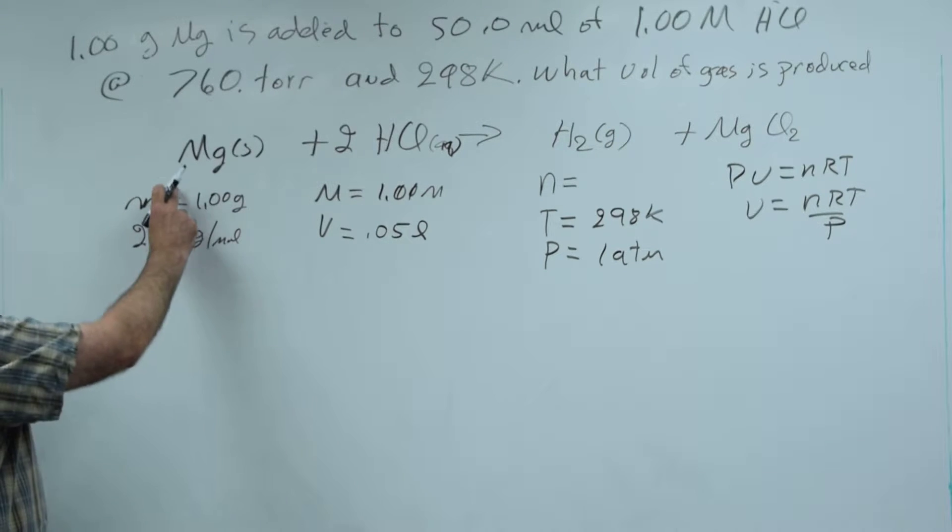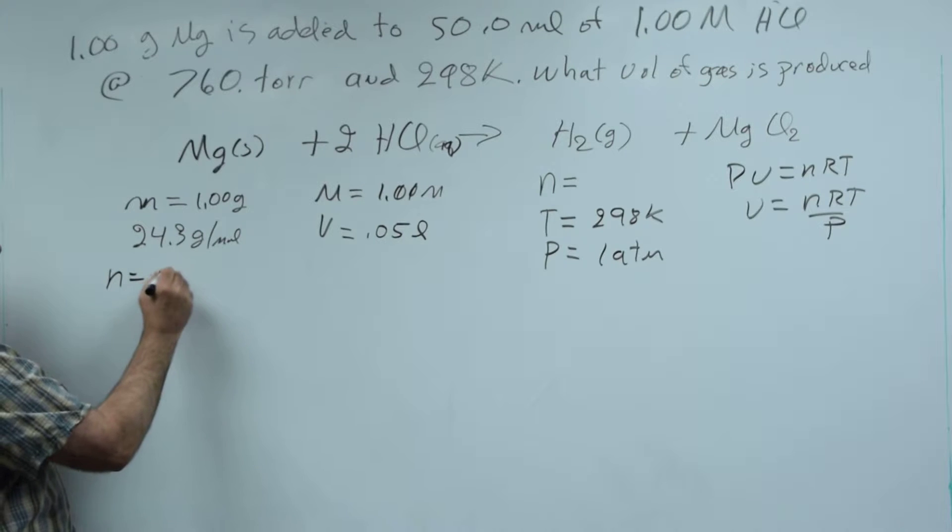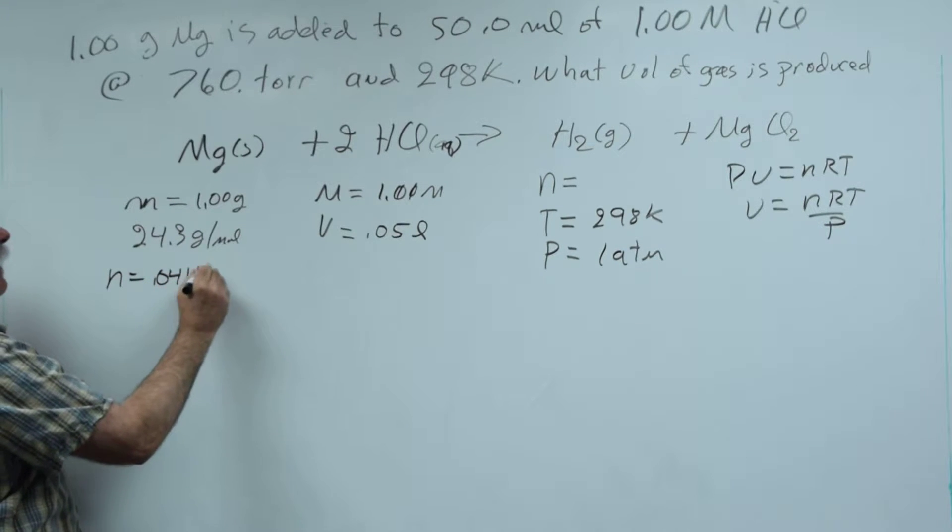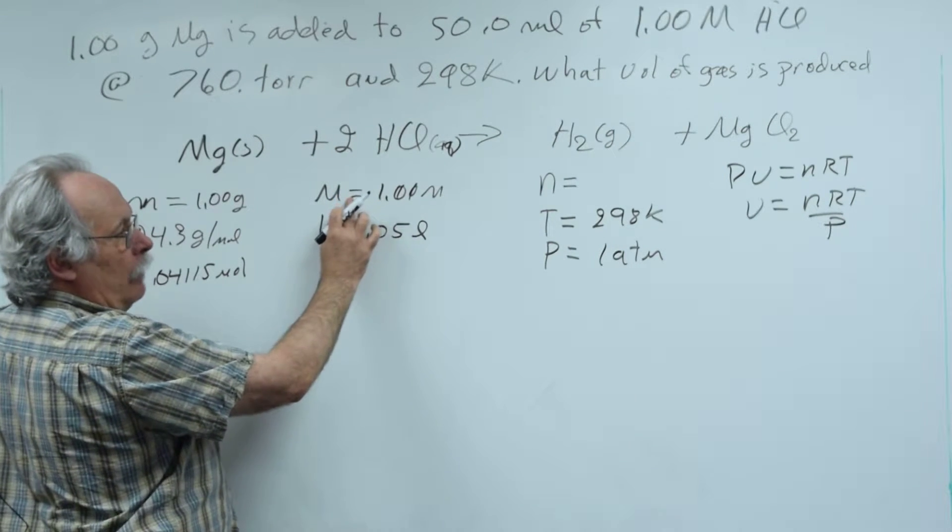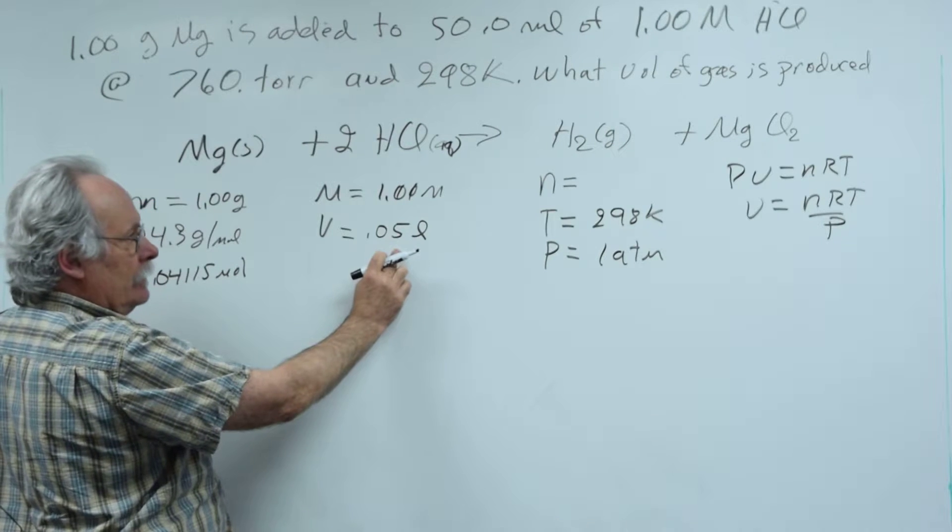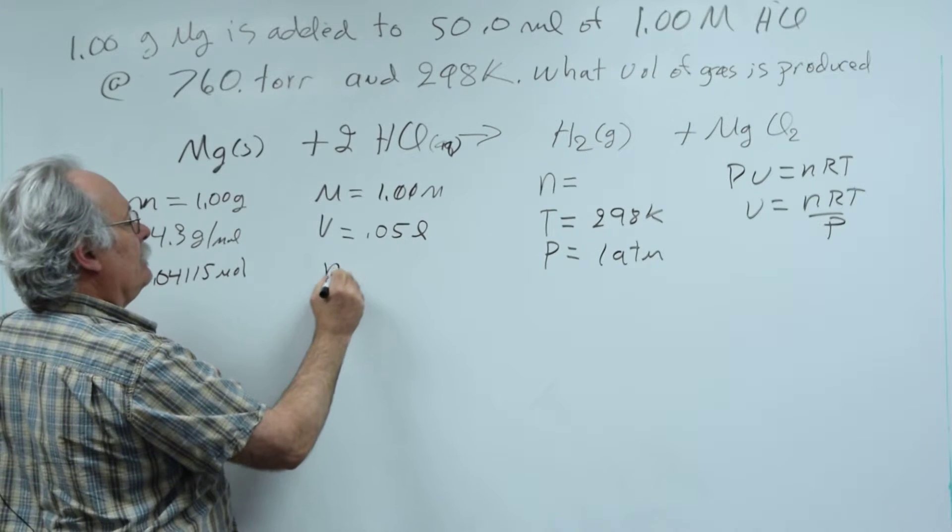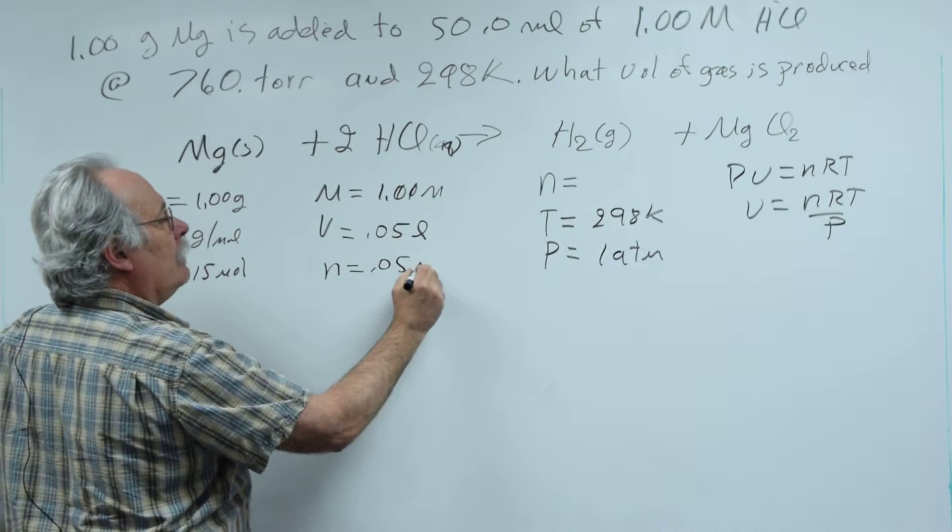So, I take my mass, divide by the molar mass, the grams divided by the grams per mole. And this gives me n equals 0.04115 moles. Now, I take my molarity, moles per liter, multiply by the volume in liters, and this gives me n equals 0.05 moles.